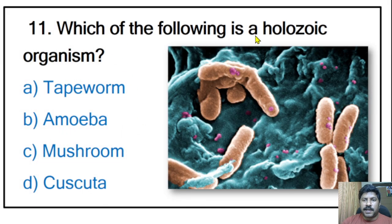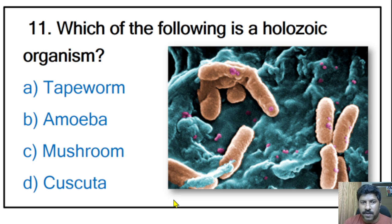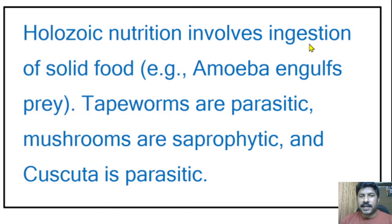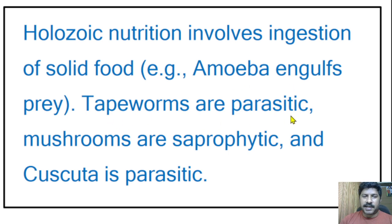Eleventh question: which of the following is a holozoic organism — tapeworm, amoeba, mushroom, or cuscuta? The correct answer is amoeba. Holozoic nutrition involves ingestion of solid foods — amoeba engulfs its prey. Tapeworms are parasitic, mushrooms are saprophytic meaning they eat dead materials, and cuscuta is also a parasitic organism.